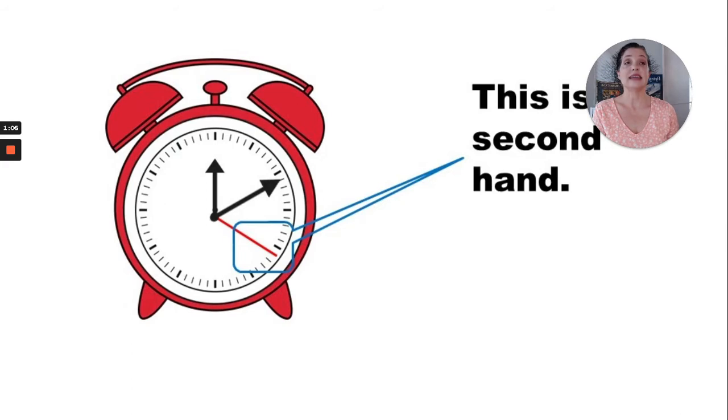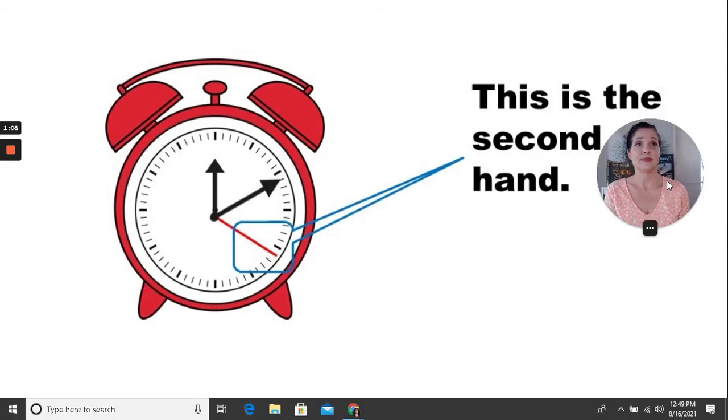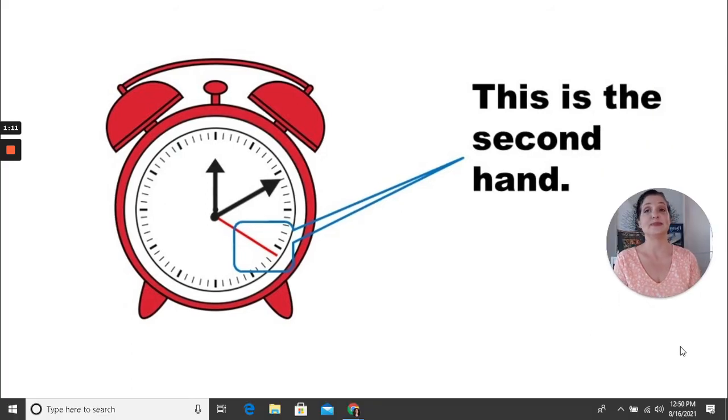This is a second hand. What do you notice about the second hand? Do you see that it's red? Do you notice that it's the longest hand on the clock?